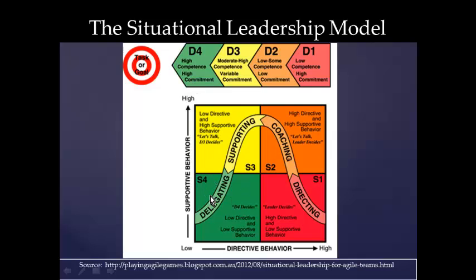Level four — delegating — really resonates with SAMR's redefinition level. The student is highly competent and highly committed to carrying out the task, very intrinsically motivated. You give them the broad brush strokes, low direction, low supportive behaviour, and just say, 'Go for it.' They'll work out what they need to learn, where to get it, how to present it, and be very creative. If you have chaos in your classroom, it may be because you're delegating to students who actually need to be told — you're mismatching your leadership style to the individual's task ability and confidence.